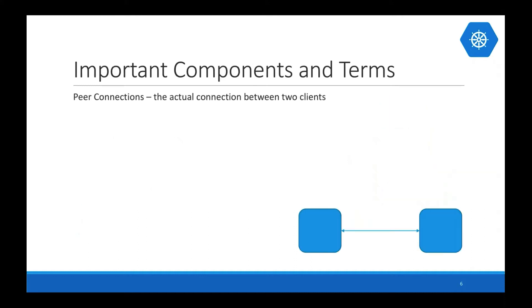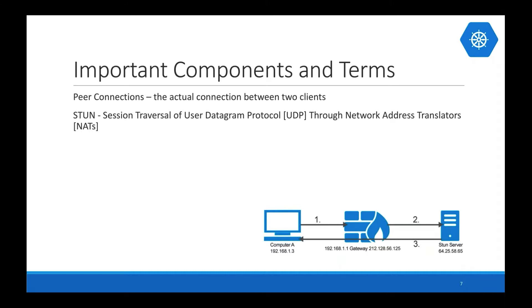Some important components and terms. First and most important is the peer connection — the general term for when two clients are directly connected to each other. The second is STUN, which stands for Session Traversal of User Datagram Protocol through Network Address Translators. It's basically the means of communicating through a firewall and getting connection information back about the actual computer, which can then be sent to another client to tell it how to connect.